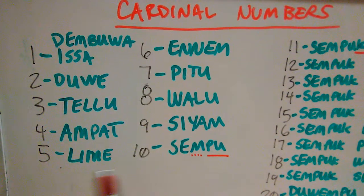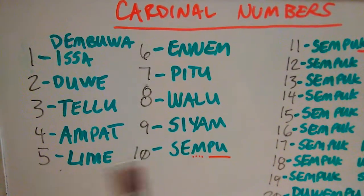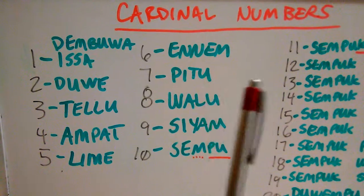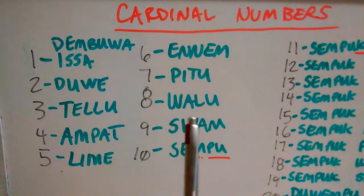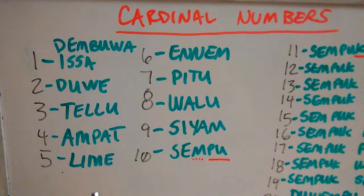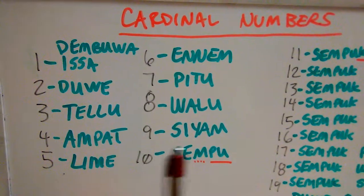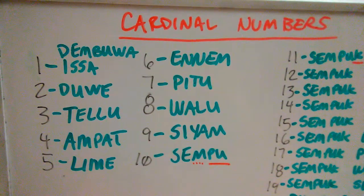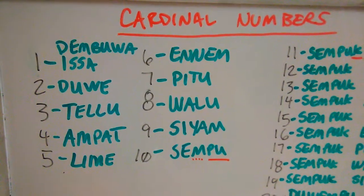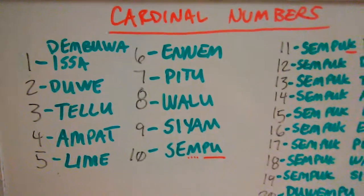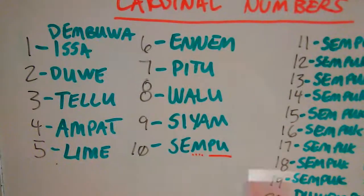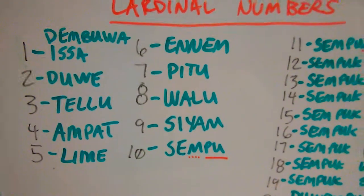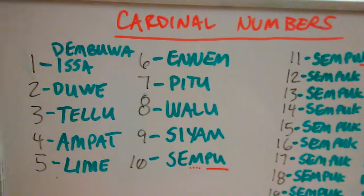Five is Lime — similar to Lima but with an E at the end. Six is Ennem. Seven is Pitu. Eight is Walu. Nine is Siam. And ten is Sempu. With endings like Pitu, Walu, Siam, and Sempu, don't forget the glottal stop — cut off the air at the end. I've underlined the 'Pu' and semi-underlined the 'M' in Sempu because you're going to see a pattern later on with the agglutination.